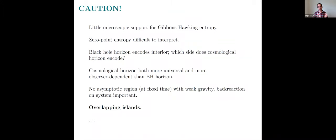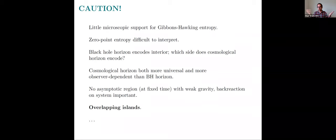It's also more observer-dependent because there's an infinity of different observers in this spacetime who have different event horizons. Whereas in the case of a black hole, unless you jump into it, you and your friend are going to agree about the black hole event horizon. A technical point important in the computations of the Page Curve is that there's no asymptotic region at a fixed time where gravity is weak. In de Sitter spacetime the spatial slices are closed, so there's no place to go where gravity gets weak, and therefore the sort of technical tricks used in that context can't be directly applied. In particular, back reaction is always important.